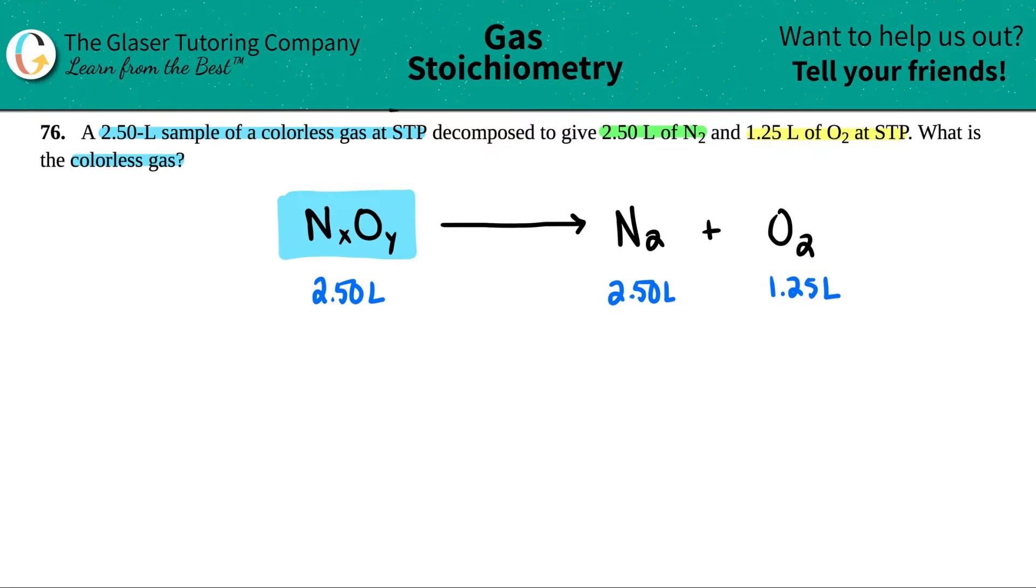Since everything was at STP, that's standard temperature and pressure, that means that the temperature was the same and the pressure was the same. If that's the case, at STP, we will treat the liters or the volumes as mole ratios. So we can just pretend that these are mole values.